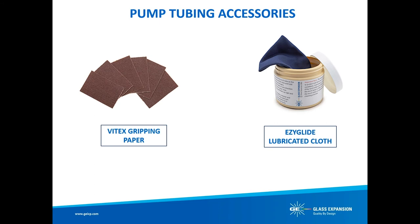Two accessories that help with peristaltic pump usage are Vitex gripping paper and EasyGlide lubricated cloth. Vitex gripping paper allows you to grip the smooth surface of the capillary tubing to fully insert it into the peristaltic pump tubing without crimping or creasing. It is well known that peristaltic pump tubing wears out over time. You can slow the rate of wear by lubricating the pump rollers with the EasyGlide cloth — this simple maintenance step improves precision, reduces drift, and extends the period between recalibrations.